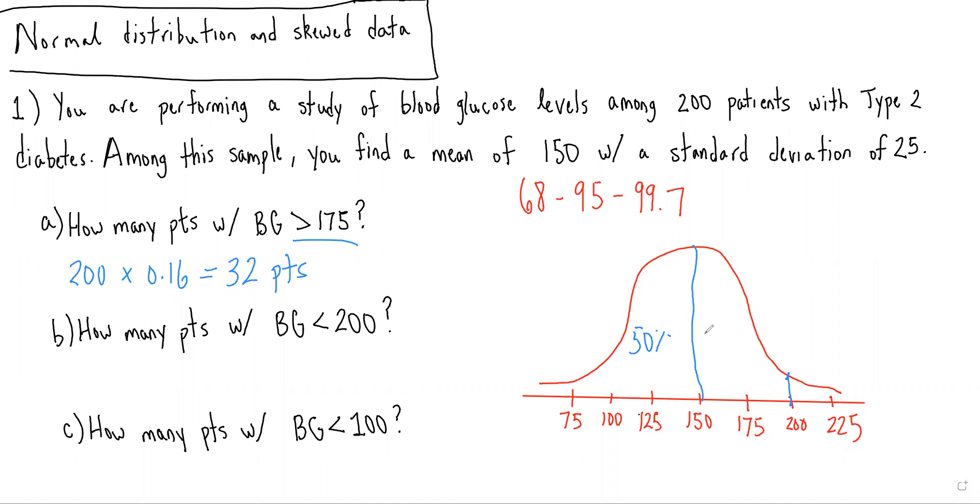And then we know because within two standard deviations, it should be 95% of our data, that this should be 47.5% of our data, because we're within two standard deviations of the mean to the right.